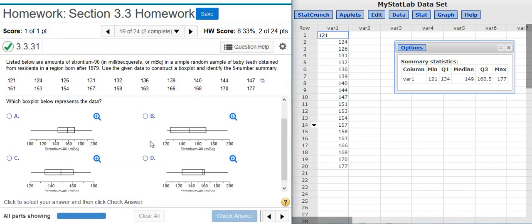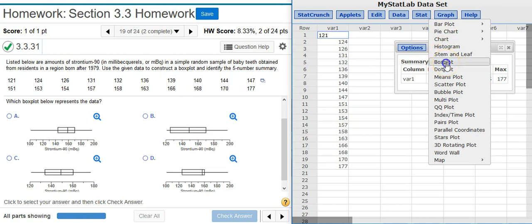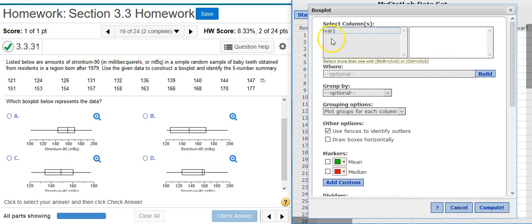And now the second part of this problem asks us to construct a box plot. I can do that very easily in StatCrunch by going to Graph, Box Plot. Here I select the column where my data is located, and then for some reason the default selection for StatCrunch is to draw the box plot vertically...